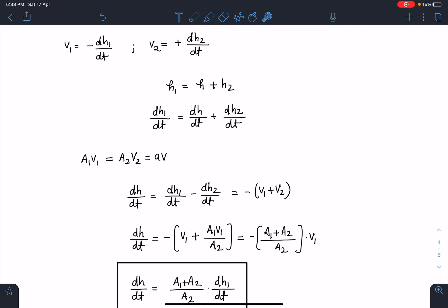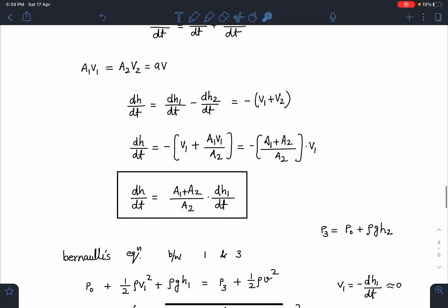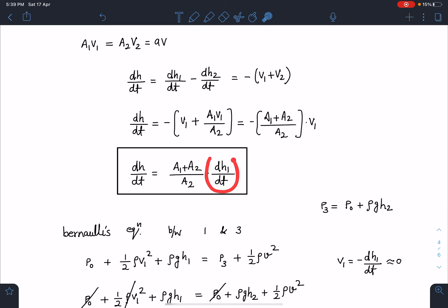Now equation of continuity also gives me the relation here: A1v1 equals A2v2 equals av. From this equation I am bringing dh/dt, so I can write it as dh1/dt minus dh2/dt, which I can write as minus of v1 plus v2. By using these two equations I can convert this entire equation in terms of v1, so dh/dt will become minus of (A1 + A2) times v1.